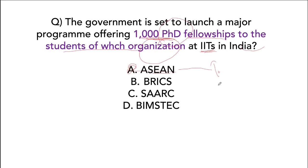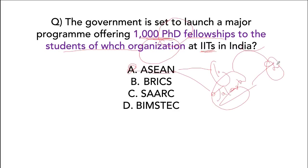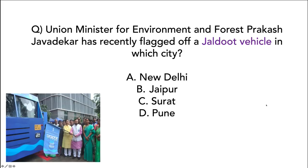There are 10 ASEAN countries and they are headquartered in Jakarta, which is the capital of Indonesia. The new capital will be East Kalimantan in Borneo. Union Minister for Environment, Forest and Climate Change Prakash Javadekar flagged off a Jal Doot vehicle in Pune, Maharashtra. This van carrying the 'save water' message will travel to different parts of Maharashtra.